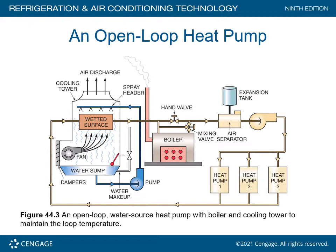In this open loop water source heat pump with a boiler and cooling tower to maintain loop temperature, we have heat pumps one, two, and three as part of the loop. Following the arrows, we go through the heat pump up to the wetted surface of the cooling tower, where the heat picked up in the heat pump is rejected. A spray header sprays water collected in the sump, cooling the wetted surface. Condensation causes water to fall back into the sump, with a float water makeup valve. The boiler uses a hand valve and mixing valve to temper the water to the required temperature. A mixing valve blends the boiler hot water with circulating water to increase temperature. An air separator removes non-condensables collected in the cooling tower, then the water is pumped back into the heat pump.